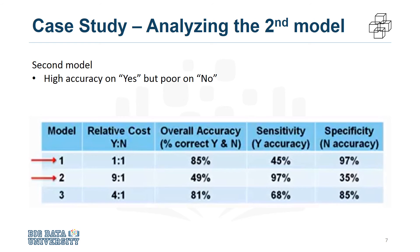The problem with this outcome is a large number of false positives, which would recommend unnecessary and costly intervention for patients who would not have been readmitted anyway. Therefore, the data scientist needs to try again to find a better balance between the yes and no accuracies.